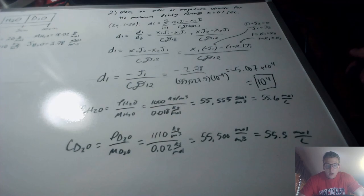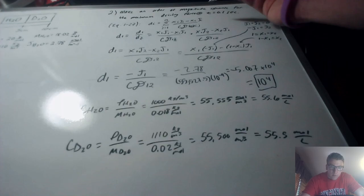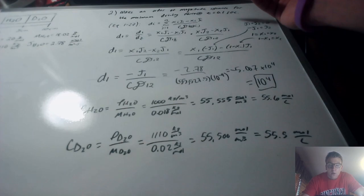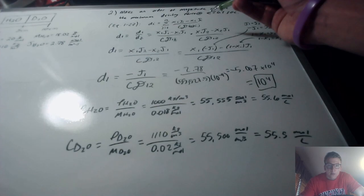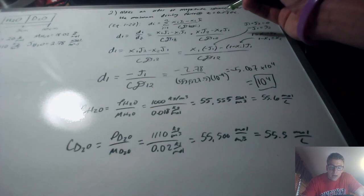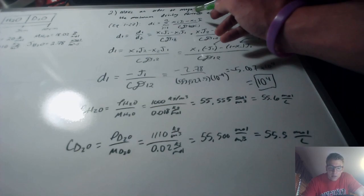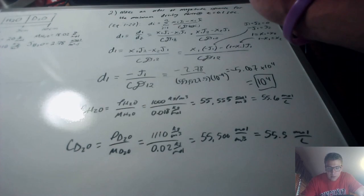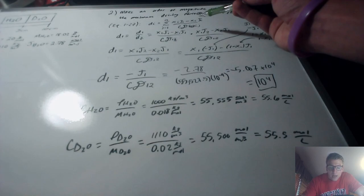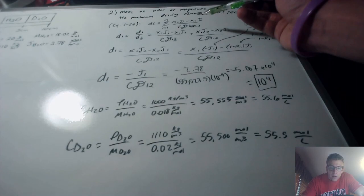For part two, we are finding the order of magnitude — an estimation for the maximum driving force at time equal to 0.1 seconds. We use equation 1-27 from the textbook, which states that the driving force of component i equals the sum from j equals 1 to n of: the mass fraction of i times the molar diffusion flux of j minus the mass fraction of i times the molar diffusion flux of i, all over the total molar concentration c times the Stefan-Maxwell diffusivity coefficient of components i and j.